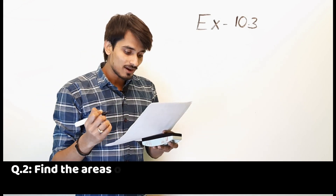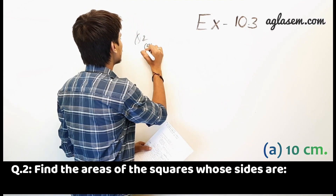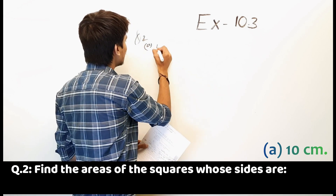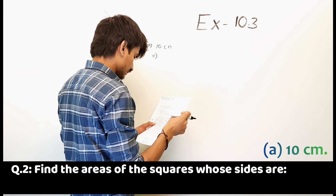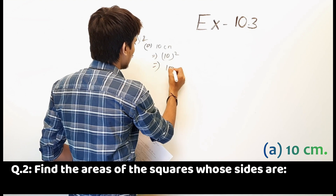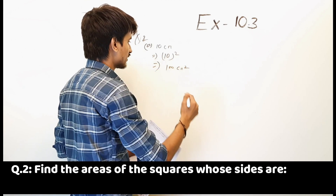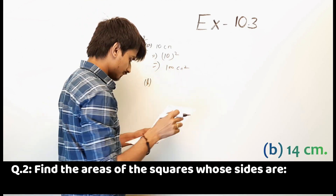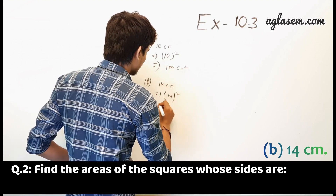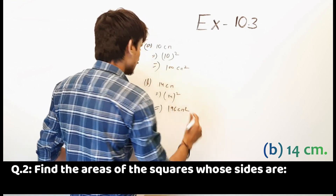Second question: find the areas of the squares whose sides are given below. Part A: square side is 10 centimeter. So 10 squared is equal to 100 centimeter square. Part B: 14 centimeter. So 14 squared is equal to 196 centimeter square.